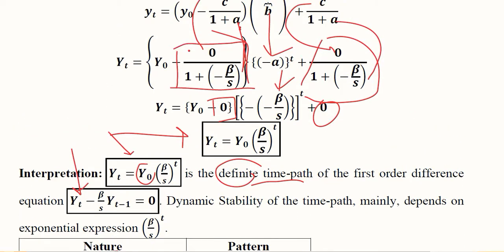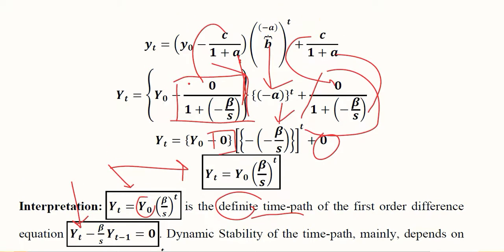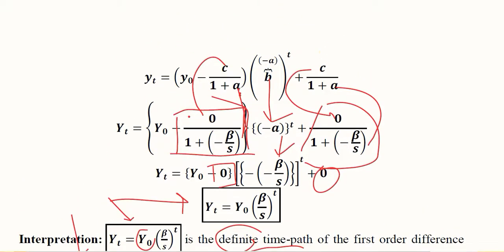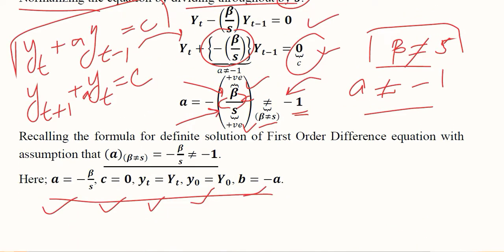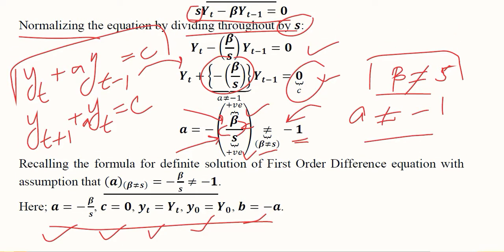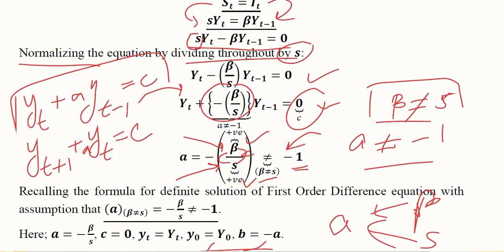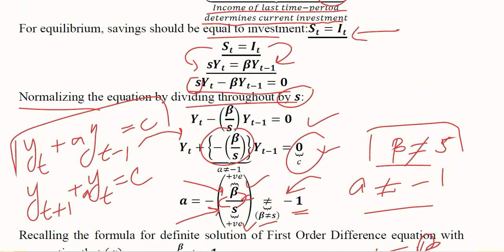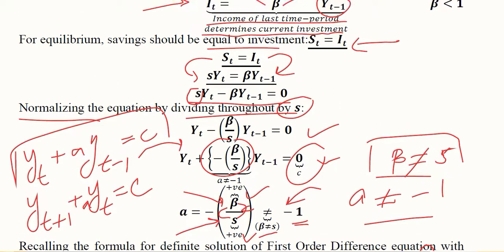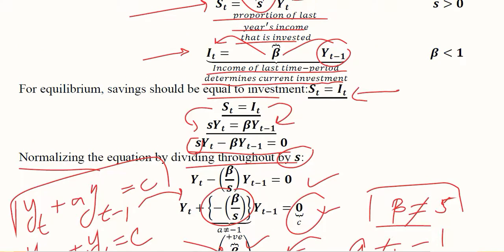By using the formula for first order difference equations, the formula was based on the value of a which was further based on the values of beta and s. Finally, after extracting these values, we get s equals i. The economic reasoning of getting this first order difference equation is the equilibrium in the capital market was achieved.